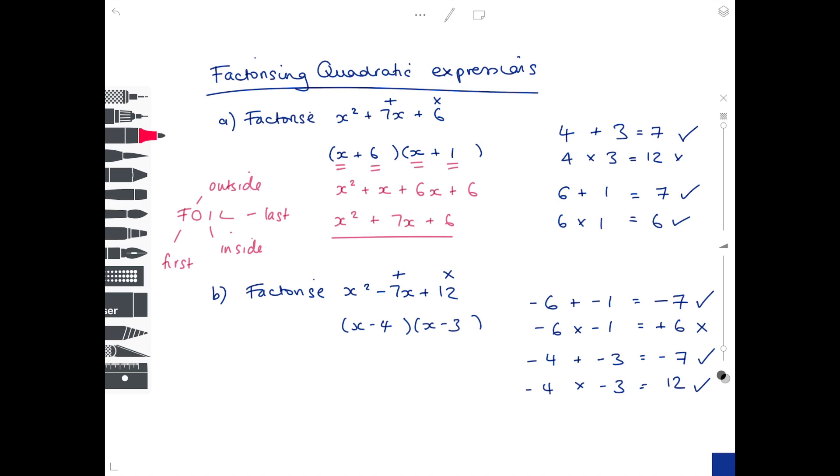Using FOIL, we're going to multiply out those brackets just to prove that we've got our answer right. Let's multiply out our first values, which is x². Then our outside values, which is -3x. Inside values, which is -4x. And last values, which is -4 times -3, which is +12. Collect together like terms and compare to your original expression. It's the same, so we know that our answer here is correct.